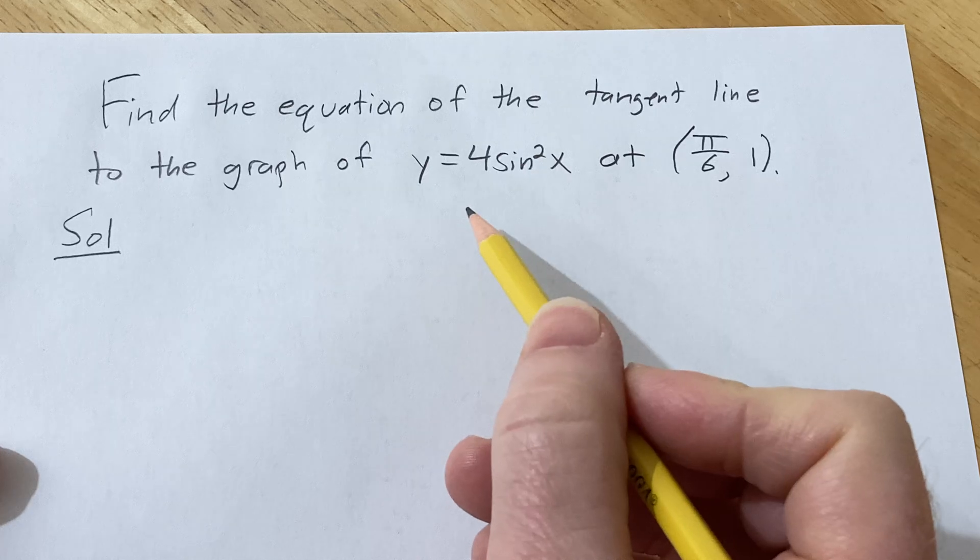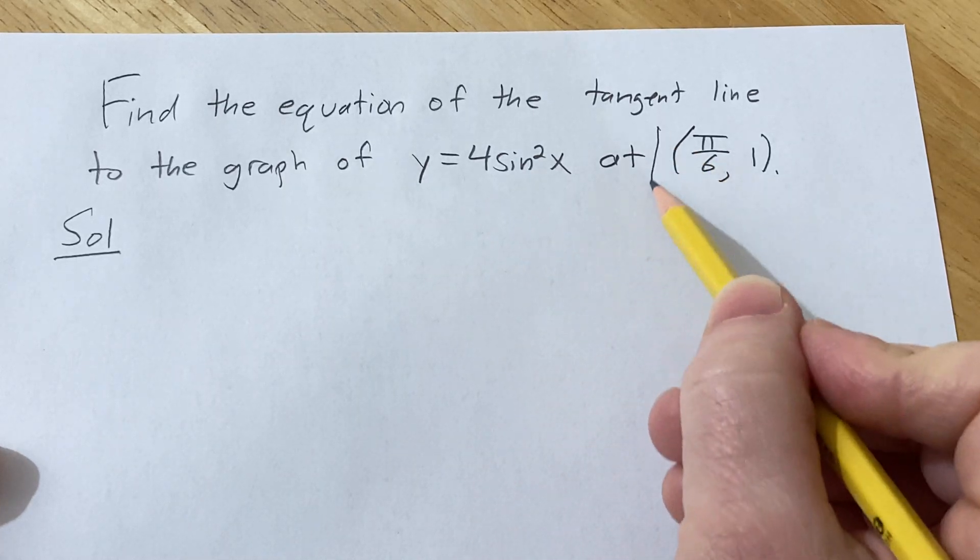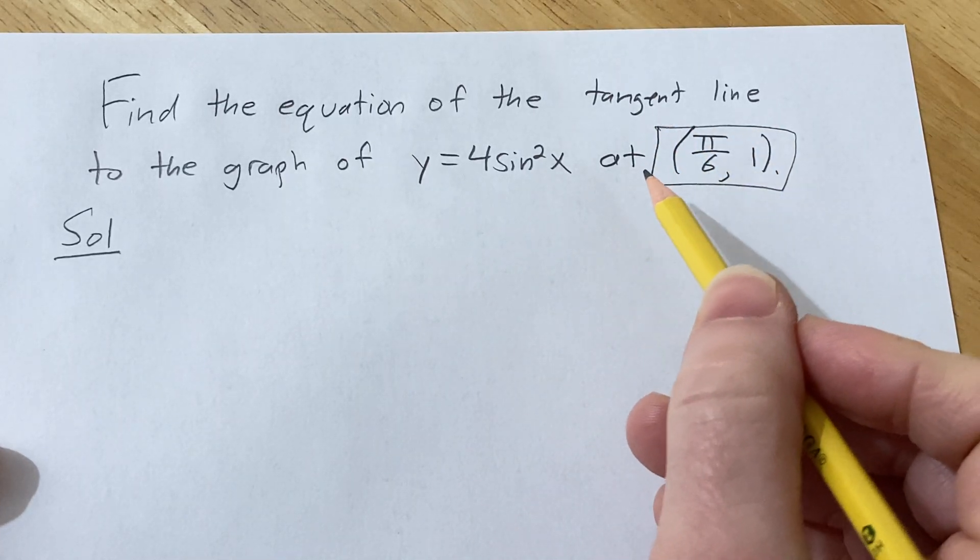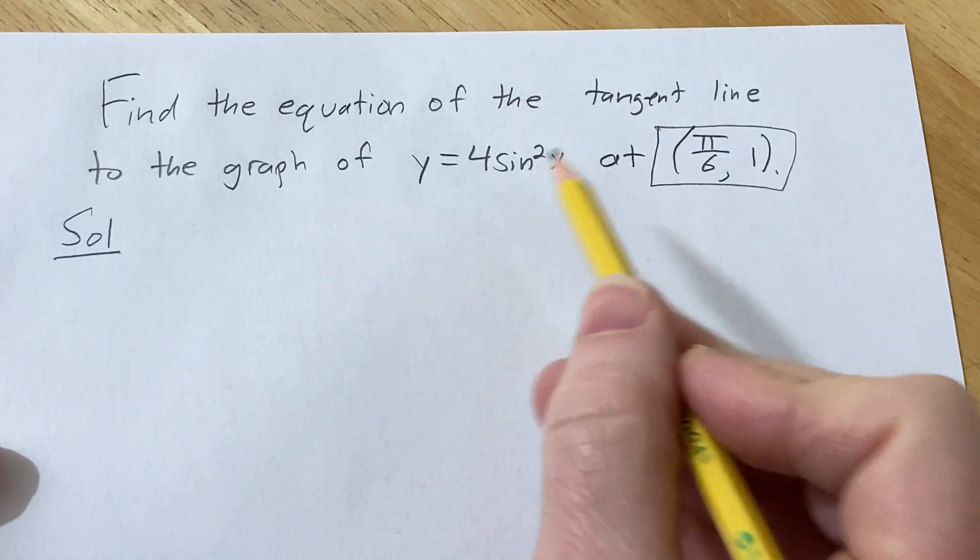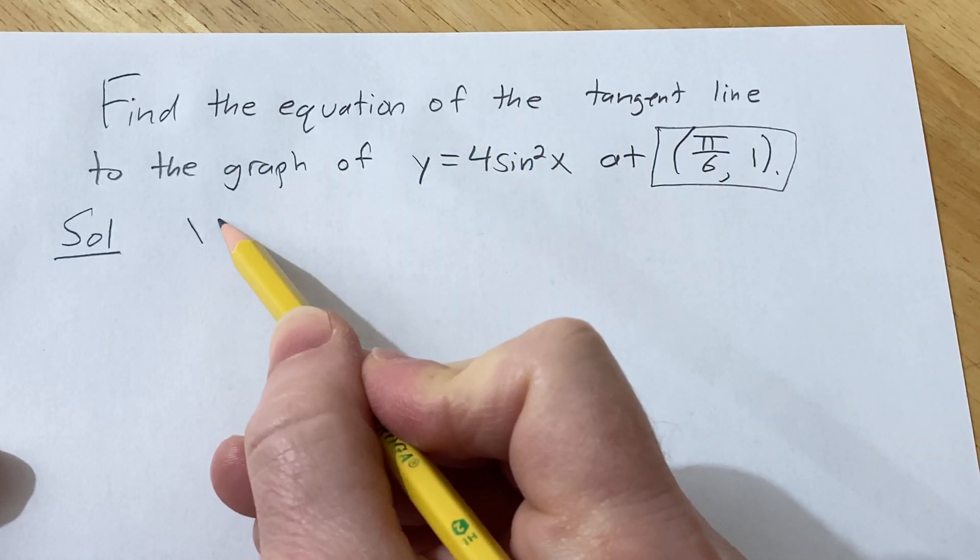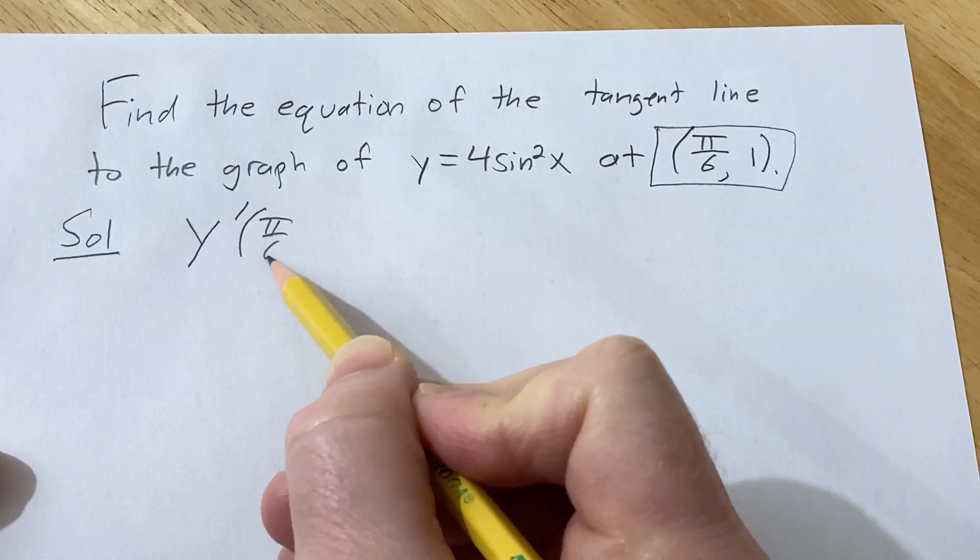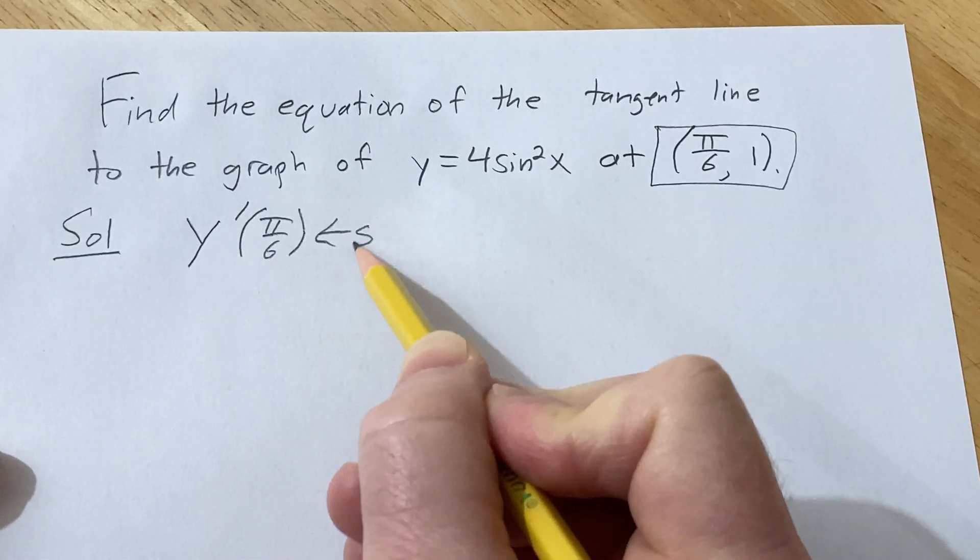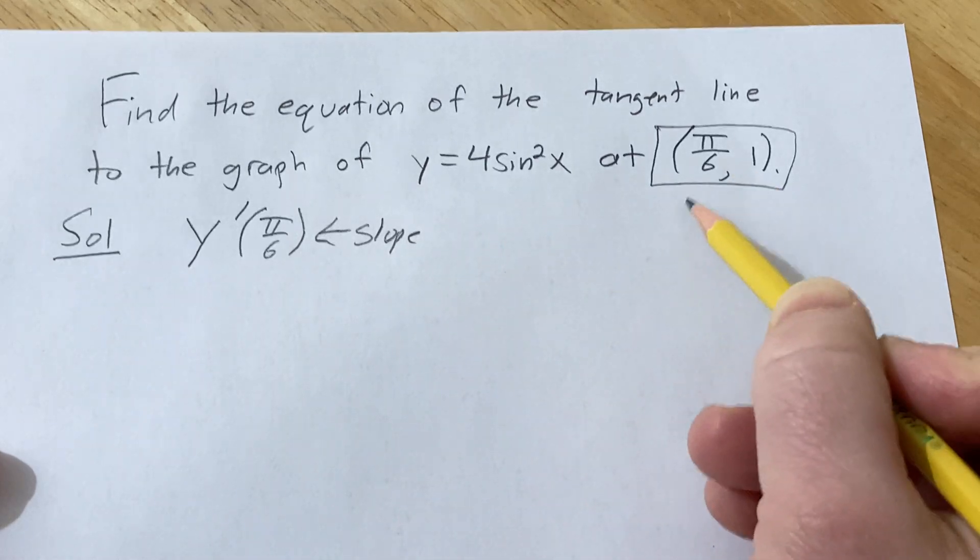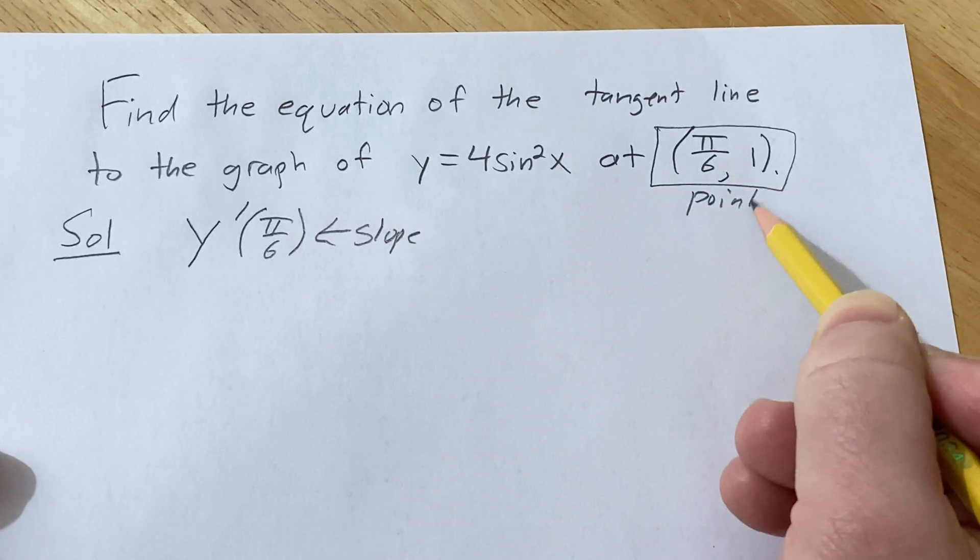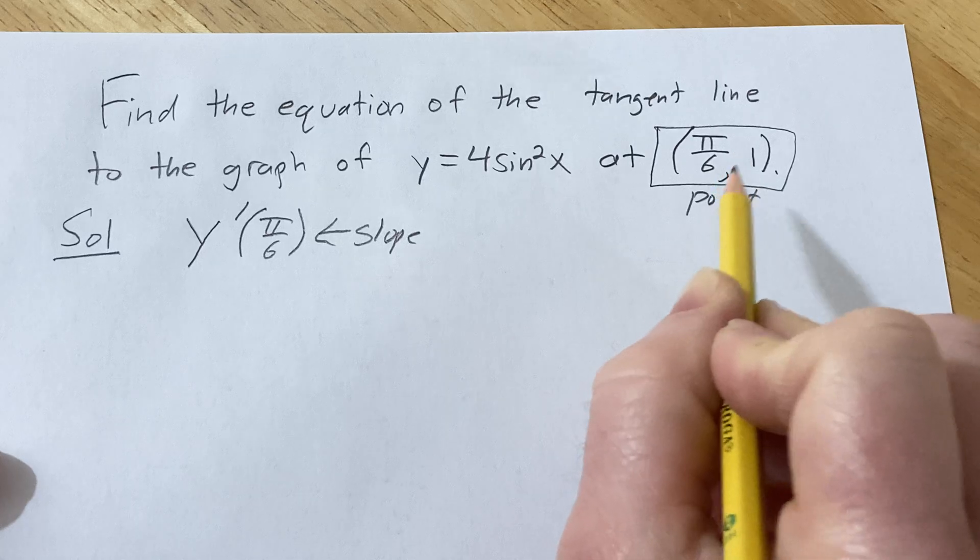To find the equation of the tangent line we need two things. We need a point, which is already given in the problem, and we need a slope. So the slope of the tangent line is going to be the derivative of y evaluated at π/6. This will be the slope of our tangent line, and this is the point that lies on our tangent line.